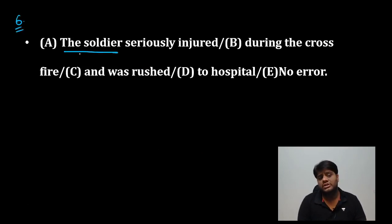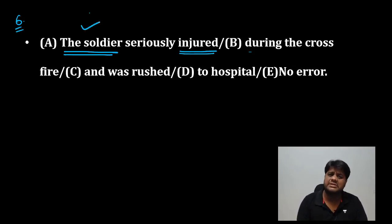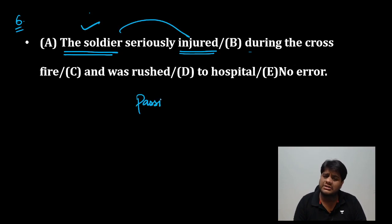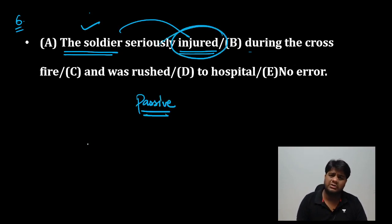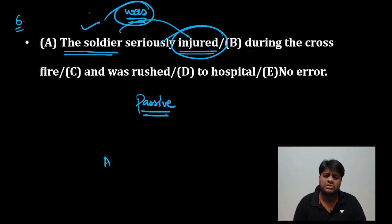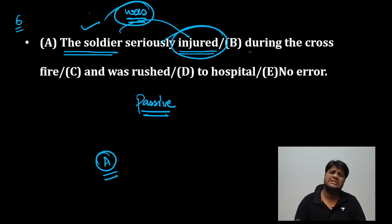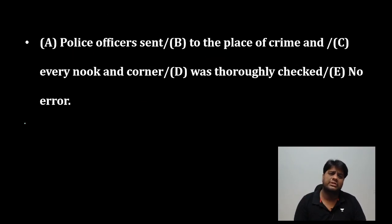Question number 6: 'The soldier seriously injured during the crossfire.' सिपाही ने किसी को ज़ख्मी नहीं किया — वह खुद ज़ख्मी हुआ। तो यहाँ passive voice आएगी। 'Seriously injured' गलत है — 'was seriously injured' सही है। Soldier जो था वह ज़ख्मी हो गया — उसने यह action नहीं किया।